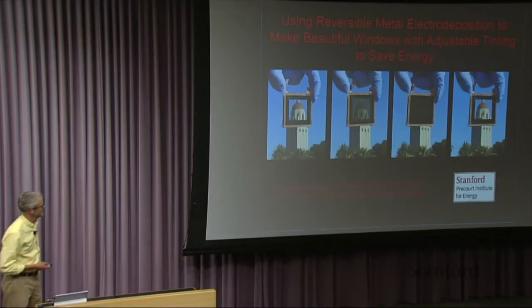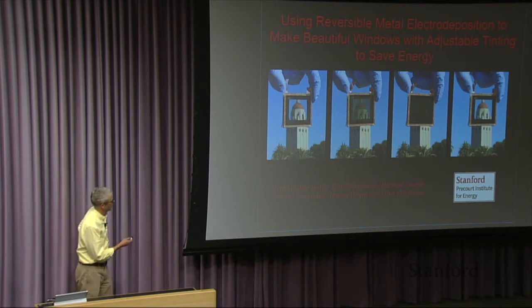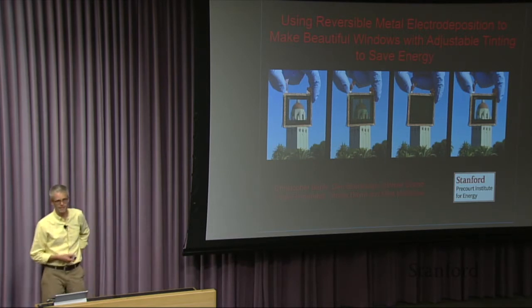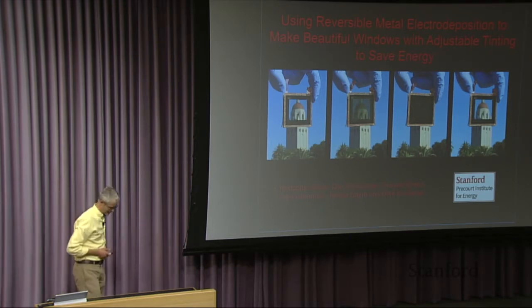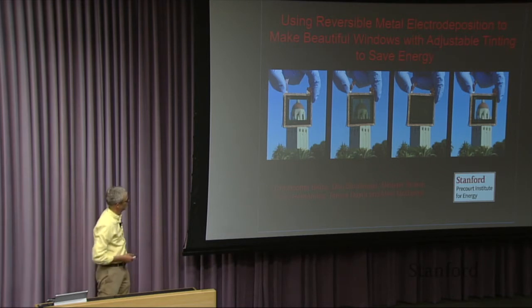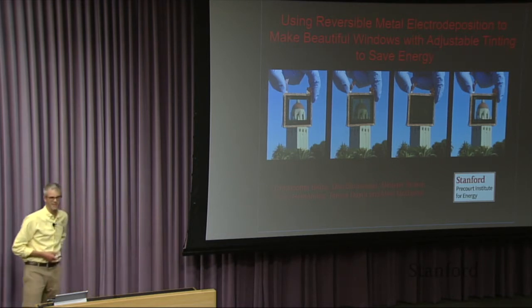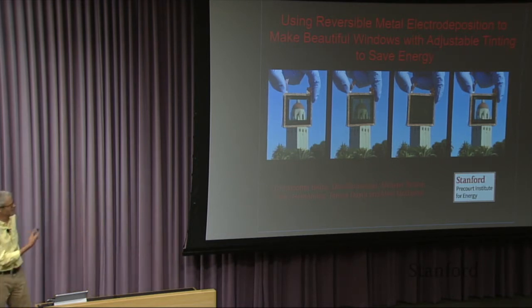We've been having a lot of fun making windows with dynamic tinting, and there's really no better way to start than to show you the windows. On the left, it's in its transparent state. And then you see that we can put the window in a partially tinting state, and it's got a nice neutral gray color to it. And then you see that after about a minute, the window absorbs almost all of the light, and it's even dark enough for privacy applications.